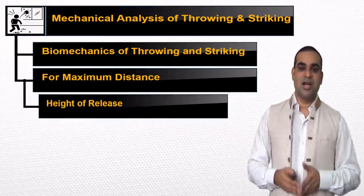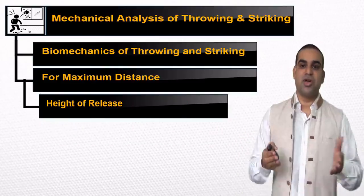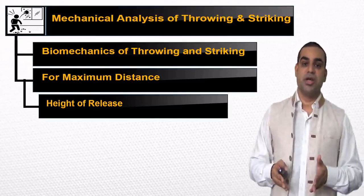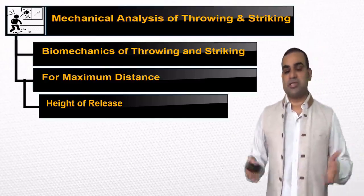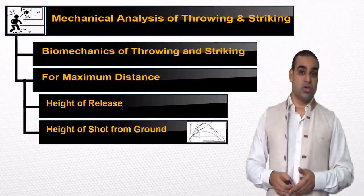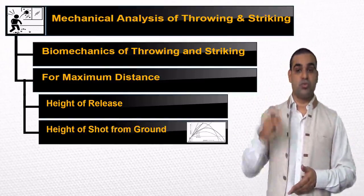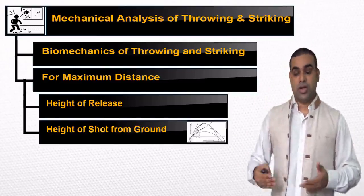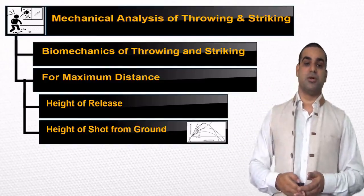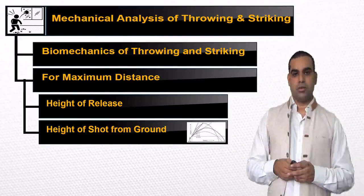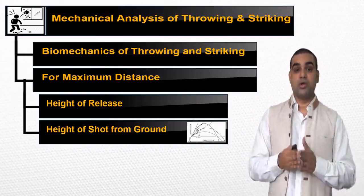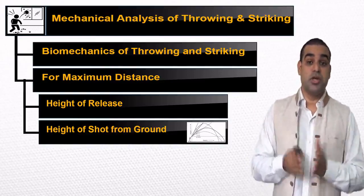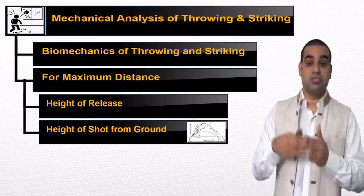Next is the height of release. Greater release height will produce greater distance. For example, if the height of a shot putter is two meters tall, he can throw much more distance. So good shot putters are almost two meters tall and 120 kg plus — they are so strong and so fast.